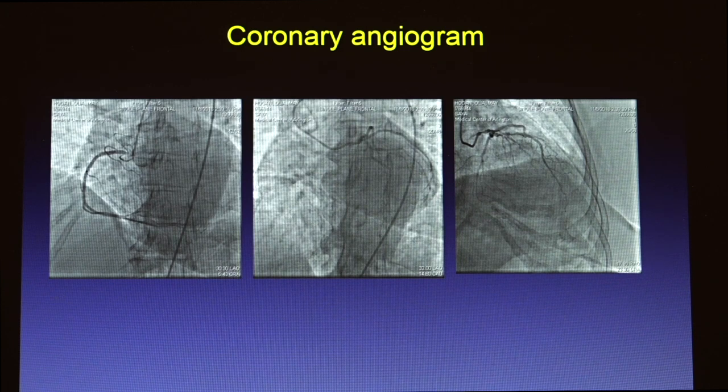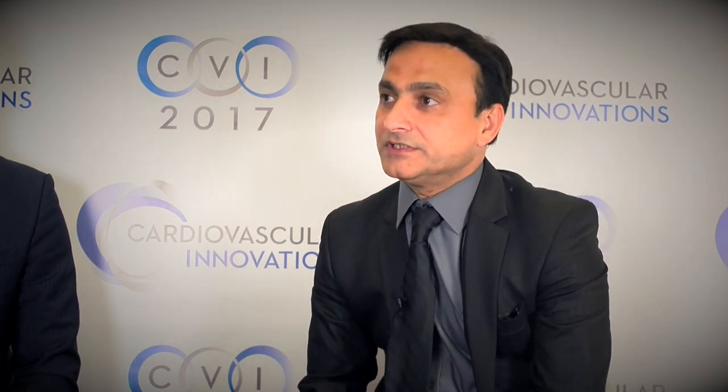She was brought to the cath lab for coronary angiogram first. The right coronary artery showed pretty severe stenosis of the ostium, and the distal left main had severe stenosis as well. Based on those findings, she was referred to cardiothoracic surgery for possible CABG, but was declined because of her severe carotid stenosis and the recent stroke. The vascular surgeon also did not want to take her to surgery because of her severe coronary artery disease. So she was referred back to me for carotid artery stenting.